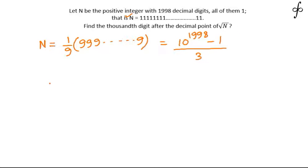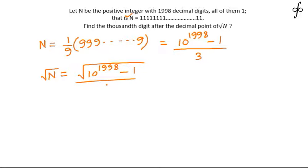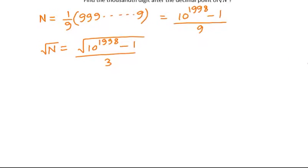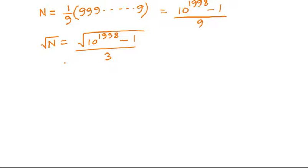We want to find the thousandth digit after the decimal point of √N. So √N is going to be √(10^1998 - 1) divided by 3 — after taking the square root of 9, it becomes 3. So this is √N.